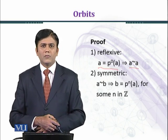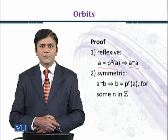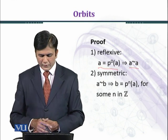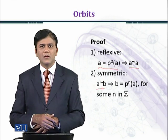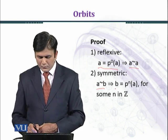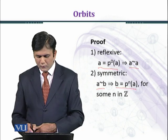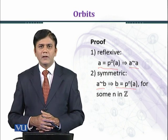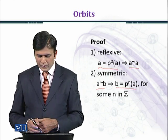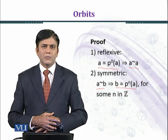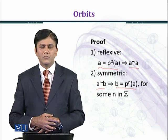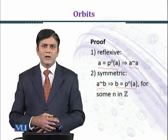Now we prove the symmetric property. To establish the symmetric property we shall assume A relates to B, and by definition we shall get B equal to P raised to power n times A, for some n belonging to Z. Here we are assuming that when the permutation P is acting on A, n times, we shall get B as the image.